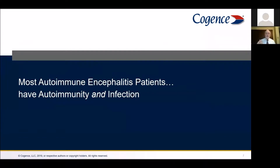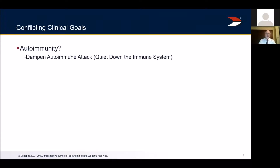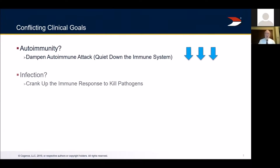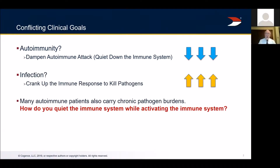Most of these encephalitis patients also have infection — they are patients who also have an infectious process. That presents the problem that you feel like you want to quiet down the immune response from the point of view of quieting down the autoimmunity, but then that's going to give the infection an advantage. On the other hand, it seems like you want to go after the infection by cranking up the immune response. So autoimmunity — you want to dampen it; infection — you want to crank it up. How do you do both?